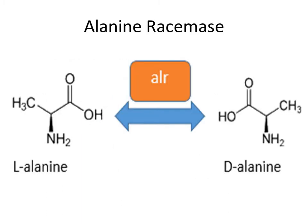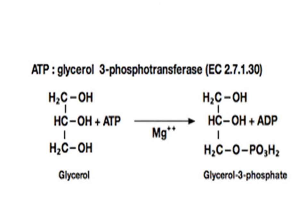The only enzymes which act on both stereoisomeric forms of a substrate are those whose function is to inter-convert L and D isomers. An example is alanine racemase, which catalyzes the reaction L-alanine to D-alanine. Enzyme-catalyzed reactions may yield stereospecific products even when the substrate possesses no asymmetric carbon atom. For example, the action of glycerol kinase on glycerol always results in the production of L-glycerol-3-phosphate, with no formation of L-glycerol-1-phosphate, even though the two CH2OH groups of glycerol are chemically identical.